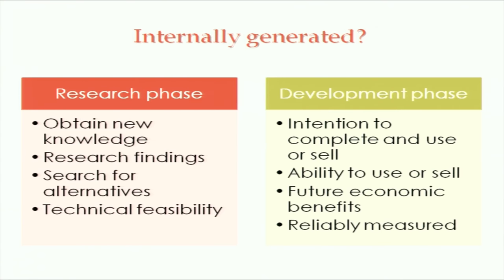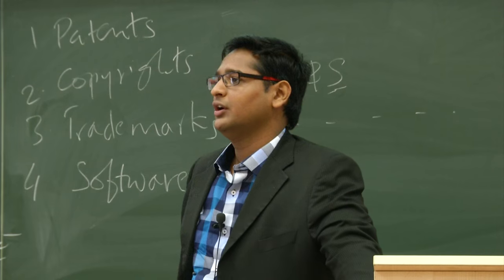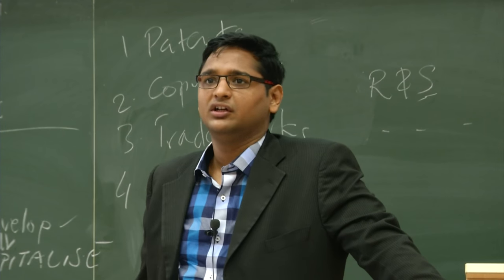Internally generated intangible assets must be distributed into two phases: research phase and development phase. Research phase includes obtaining new knowledge, research findings, searching for alternative solutions, and then doing a technical feasibility study. Once that technical feasibility is established, you start the development phase. Development phase means you have the intention to complete and use or sell, you have the ability to use or sell, which will give you future economic benefits, and you can reliably measure the same. You have to amortize intangible assets over useful life. There is a rebuttable presumption that useful life cannot exceed 10 years.